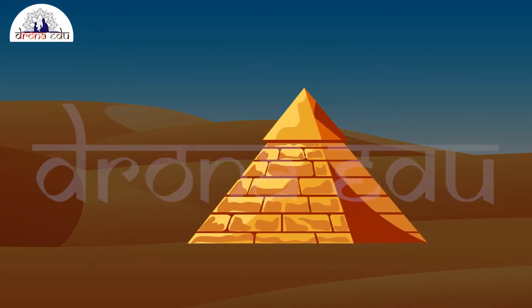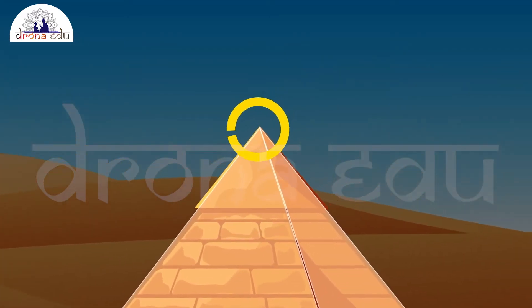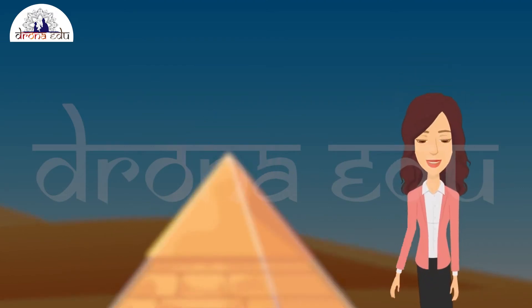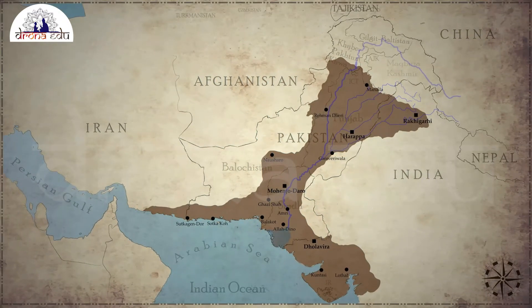A pyramid is a solid figure whose base is either a triangle, a square, or any other polygon, and its side faces are triangles converging to a point at the top.